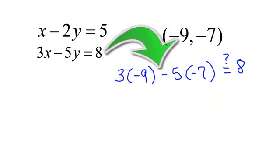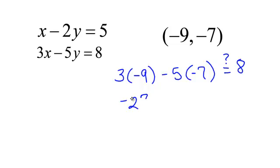And for our second equation, we should be able to plug in negative 9 for x, negative 7 for y. I would get negative 27. Negative 5 times negative 7 is a positive 35, and yes, that also equals 8.